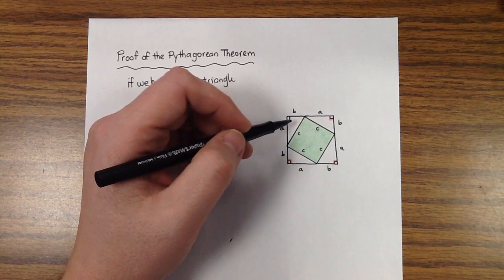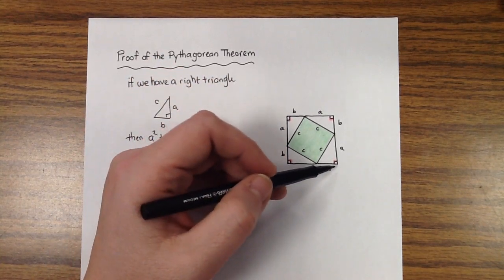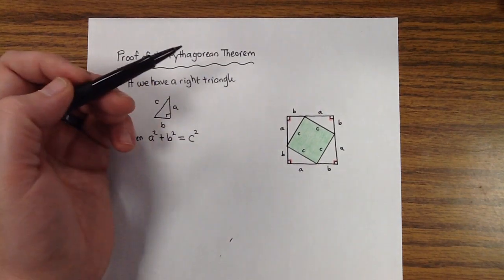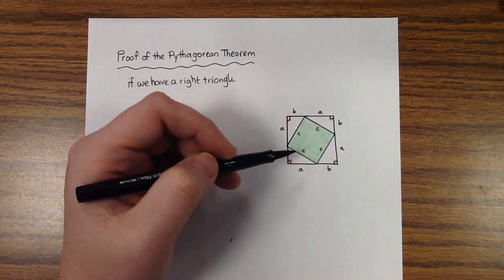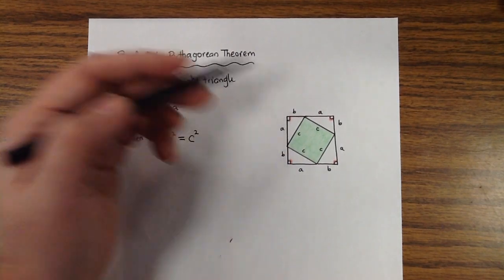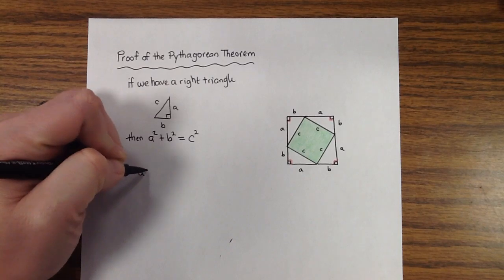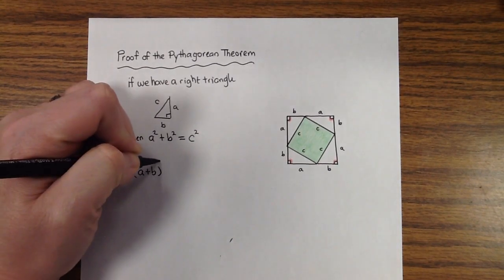For example, the area of the full square here is just side length times side length. And the side length here is A plus B. So, A plus B times A plus B is the area. And so that becomes A plus B squared.